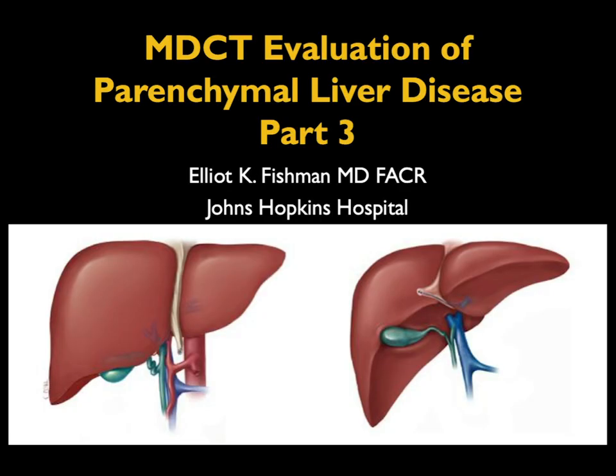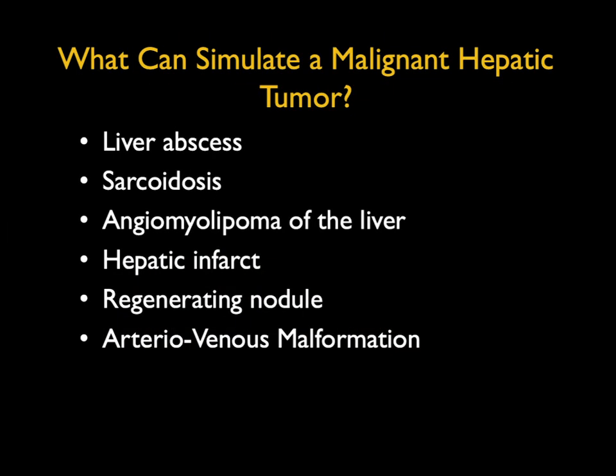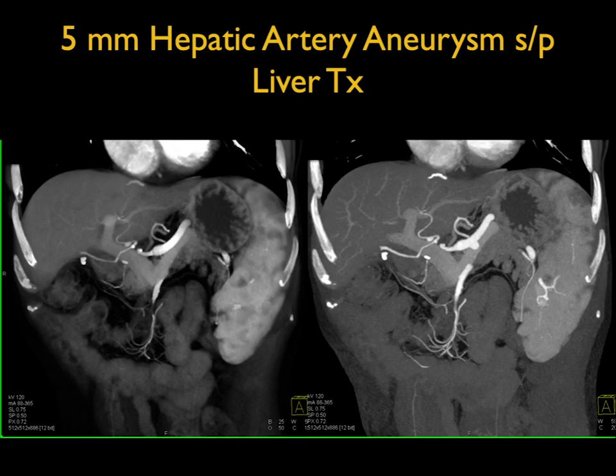Hi, this is Elliot Fishman, and welcome to part three of three of our talk on parenchymal liver disease. I want to make the point that at times, parenchymal liver disease and its consequences can simulate tumors, so it can be a challenge. We'll talk about abscesses, sarcoidosis, angiomyelipoma of the liver, hepatic infarcts, regenerating nodules, and even AV malformations.